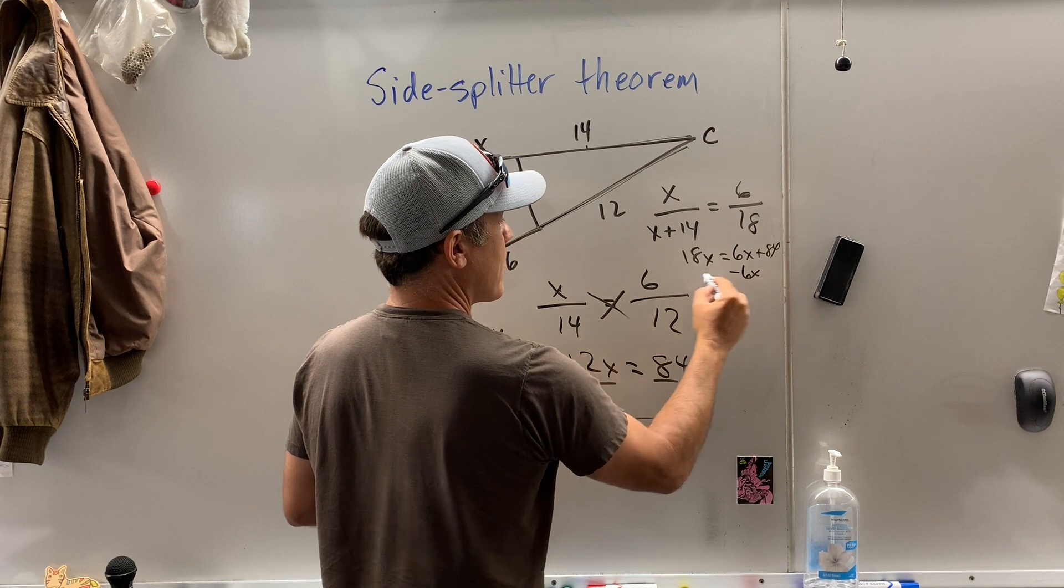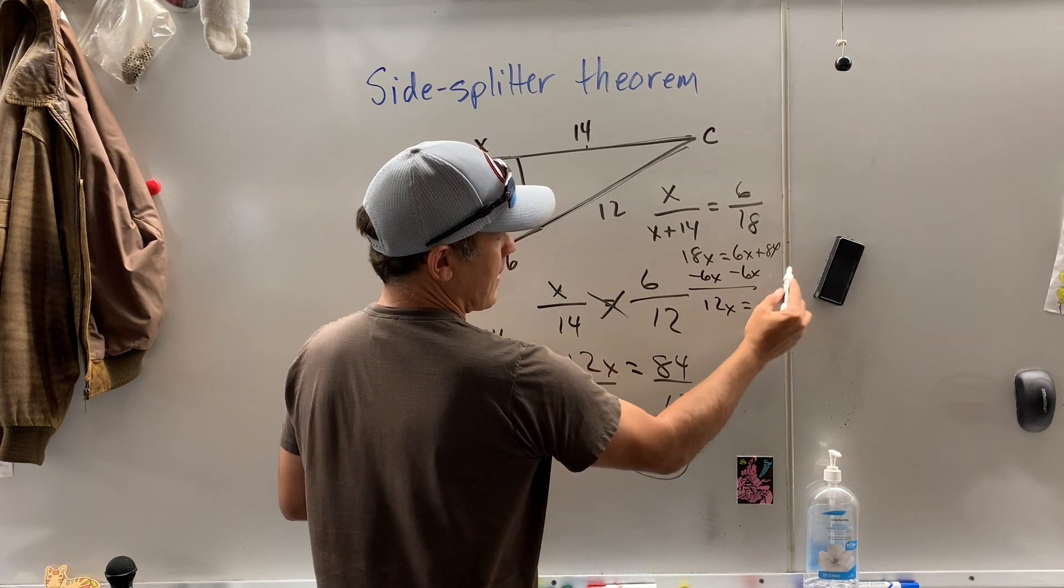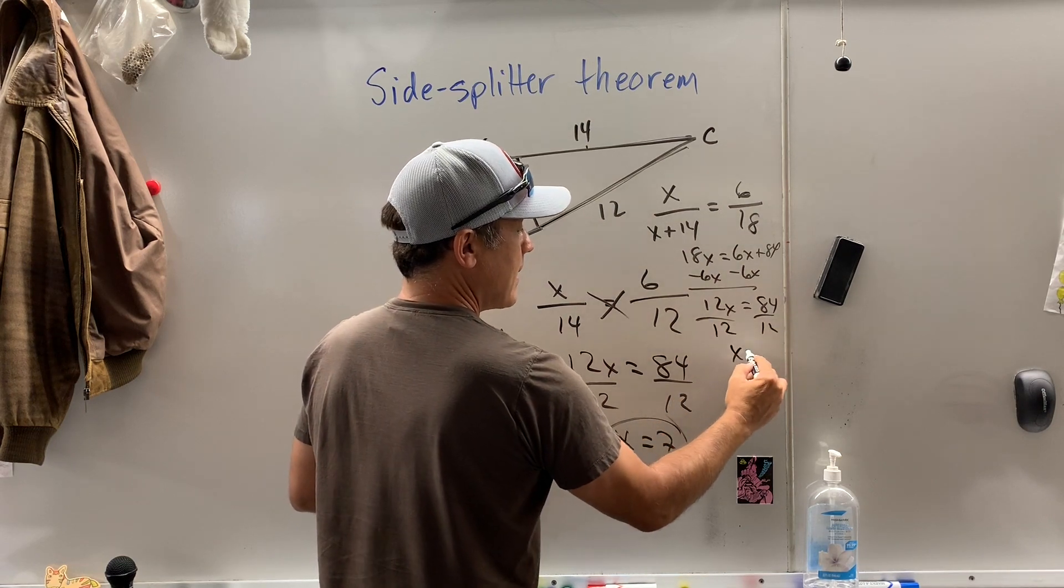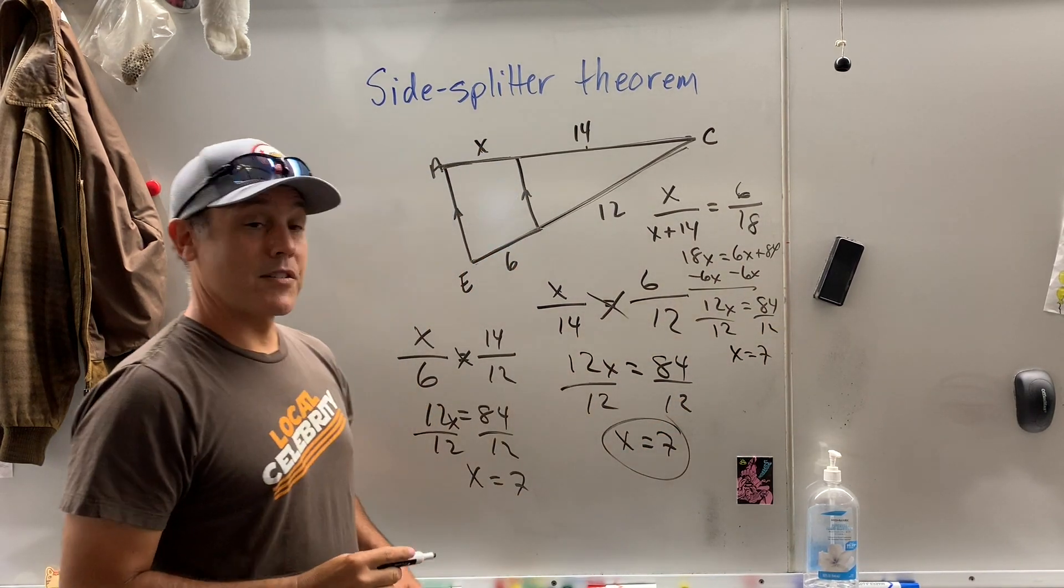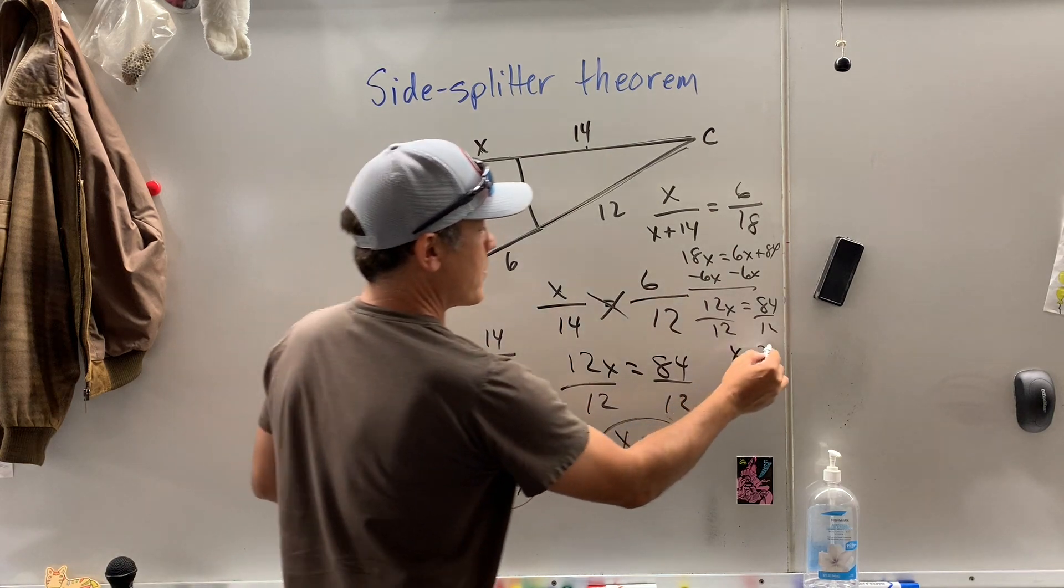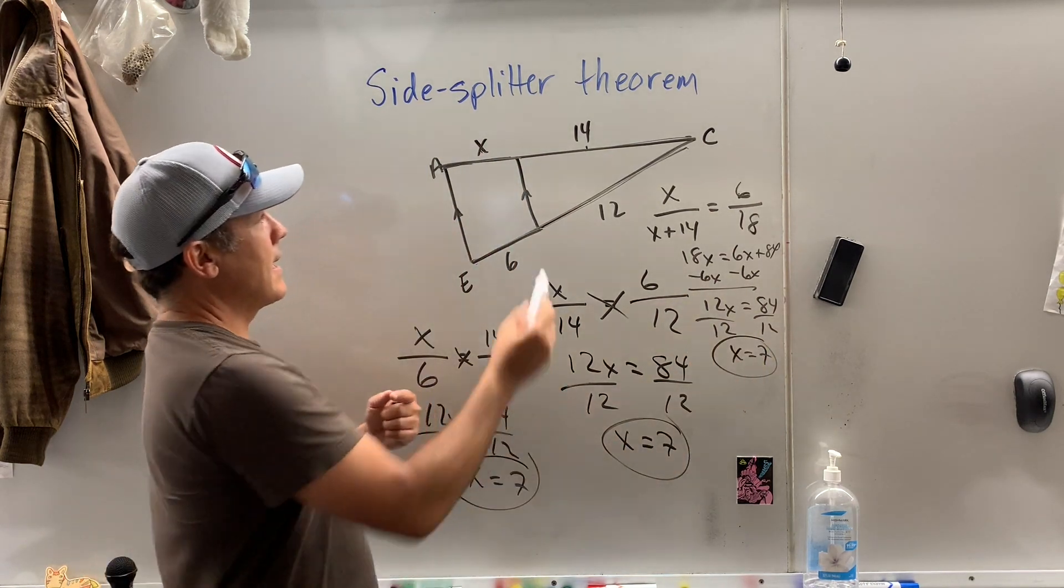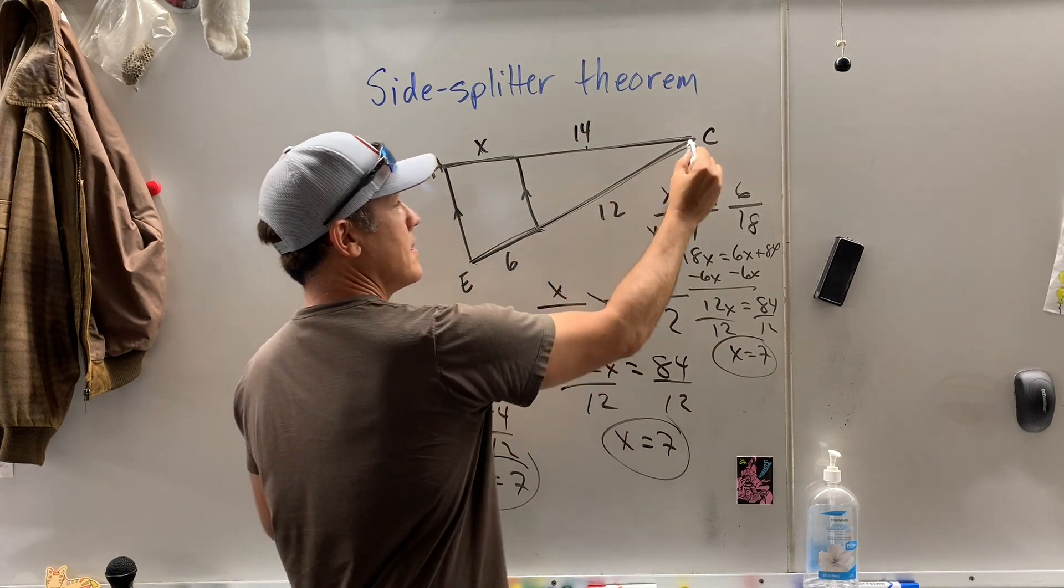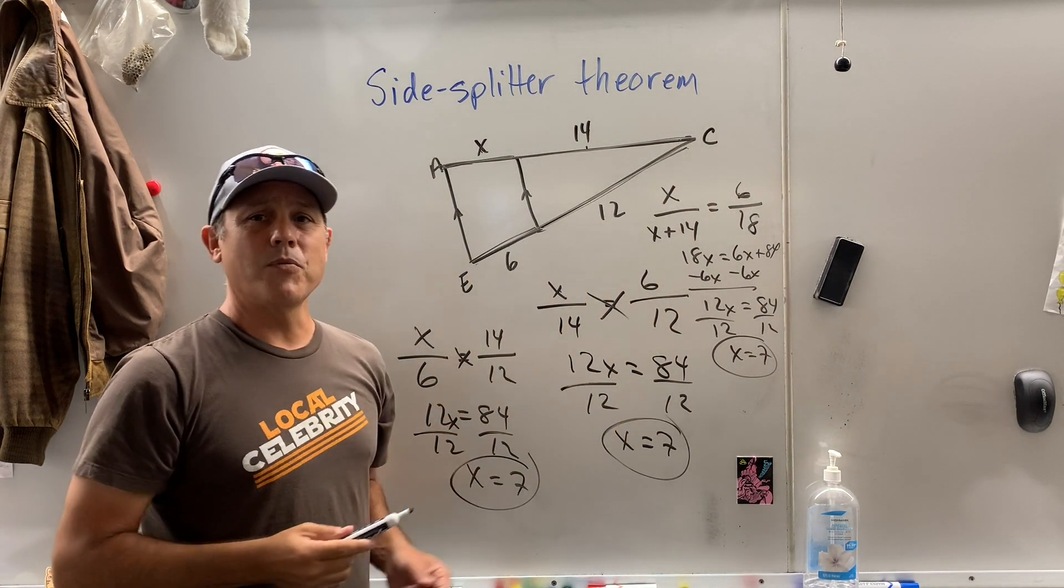You subtract 6x, and guess what, my friends? I know I'm a little cramped for space, but you get the idea. You get the same answer all three times. For my money, I like doing this is to this as this is to this. It seems the easiest to me, but you have a few ways to do it.